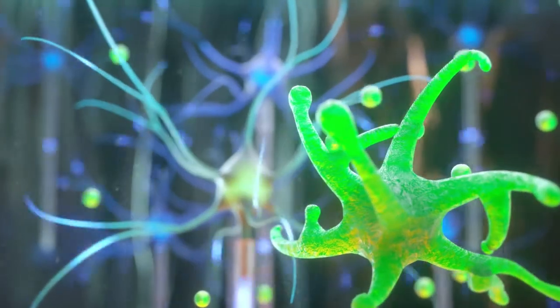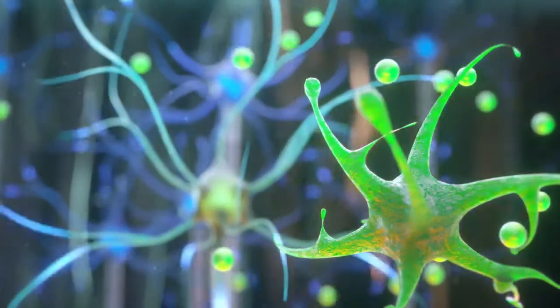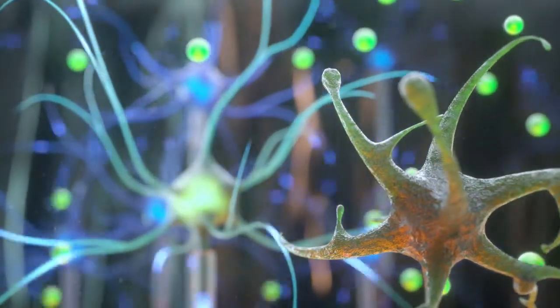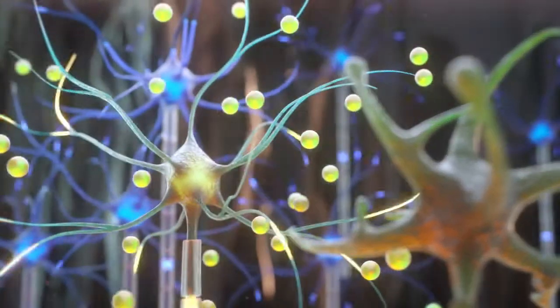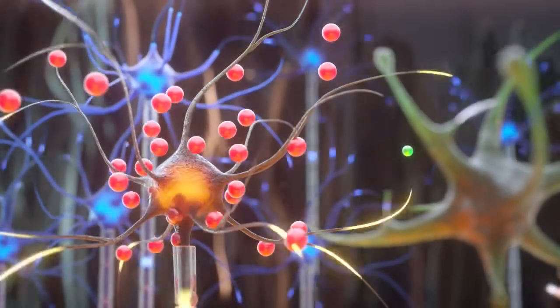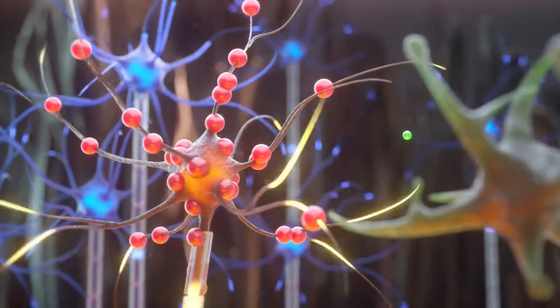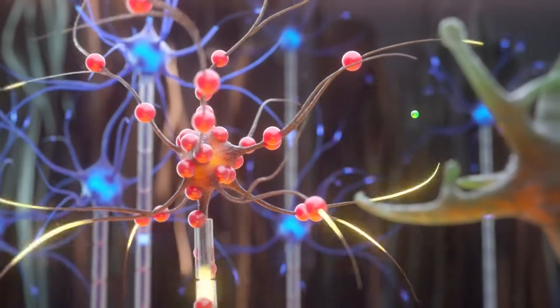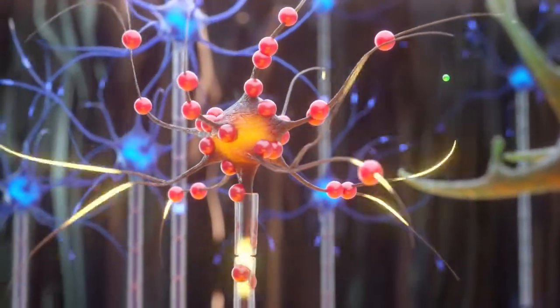In ALS, astrocytes fail to support motor neurons and thus play a key role in the disease pathology. They do not maintain a healthy environment in the CNS, which is crucial for motor neurons to function and survive.